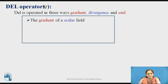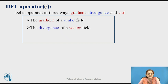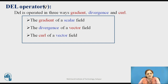The del operator can be defined in three ways: it can be defined as a gradient, it can be defined as a divergence, and it can also be defined as a curl. The gradient is considered with respect to the scalar field, whereas the divergence is considered with respect to the vector field, and the curl operation is also considered with respect to the vector field.